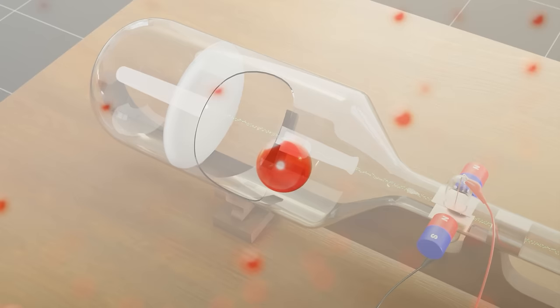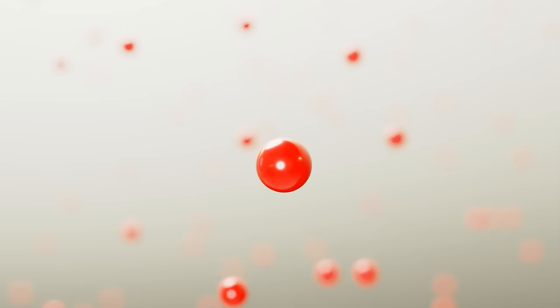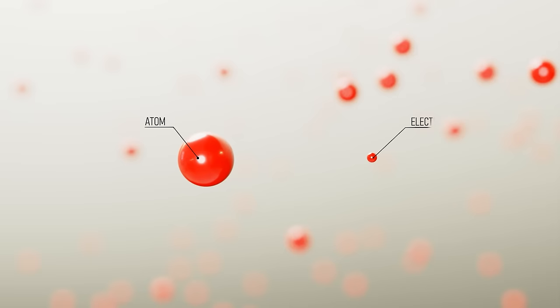After the discovery of the electron, the 2000-year-old misconception that the atom is an indivisible particle was no longer true. The discovery revealed that the atom is not indivisible. Instead it consists of subatomic particles, called electrons. But the question is, how are electrons arranged in an atom?